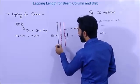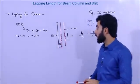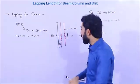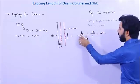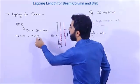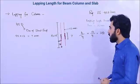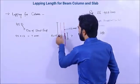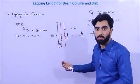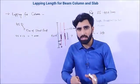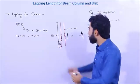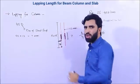After 3 feet — that is h/4 from the bottom — you are able to provide lap length. However, lap length should not be provided at the very bottom or at the very top of the column. Additionally, laps should be provided alternately, not at the same point on all bars, because providing lap at the same point can cause the column to collapse.